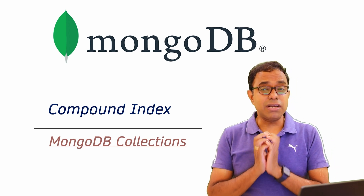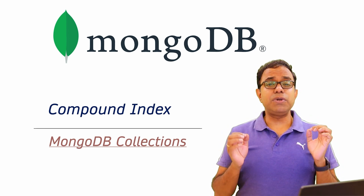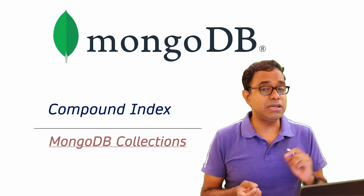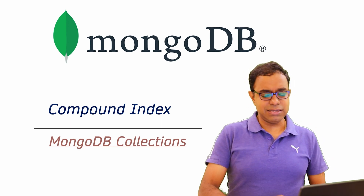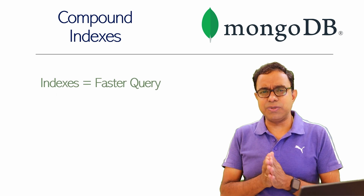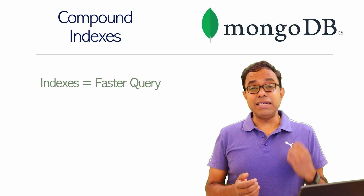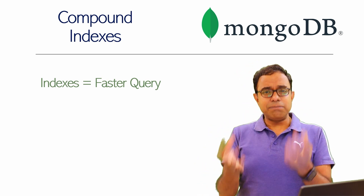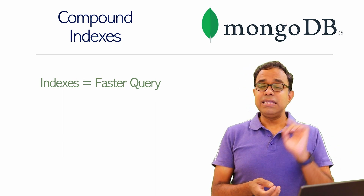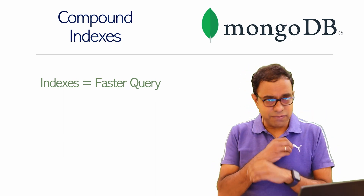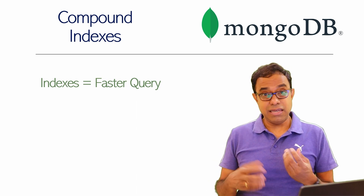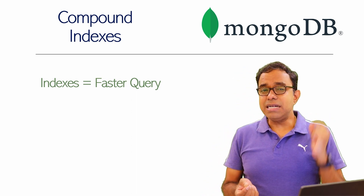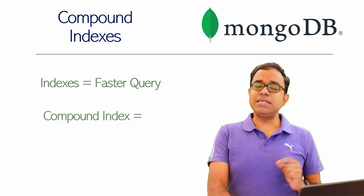Let's see what compound indexes are, because if you are creating a production-level database it is highly likely that you will end up creating one or even more than one compound index. Why do we create indexes? We create indexes for faster queries. If you are using MongoDB to query data, without indexes the query will not be fast — in fact it will be so slow that MongoDB may not be a database of choice.